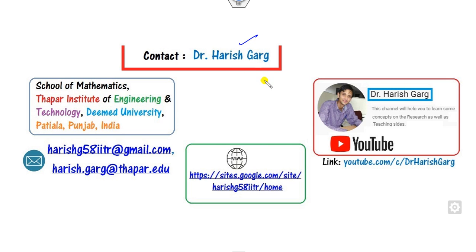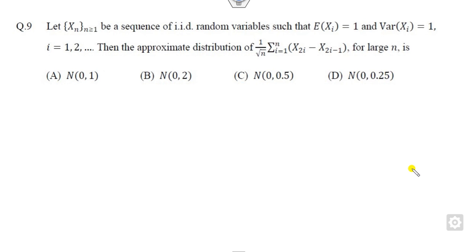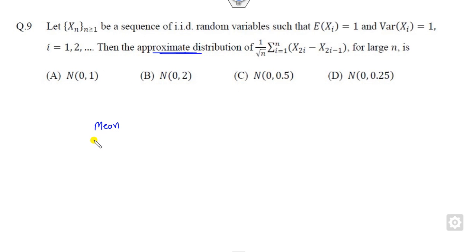I am Tukhtagar — you can simply follow this link for finding various videos. Now the logic behind approximate distribution is that whenever they ask about the approximate distribution, you have to find basically the mean and basically the variance.